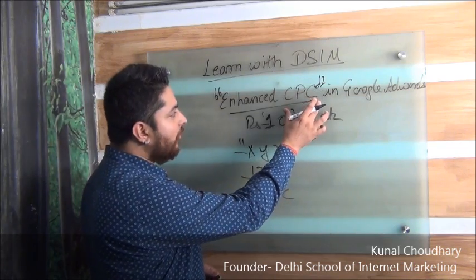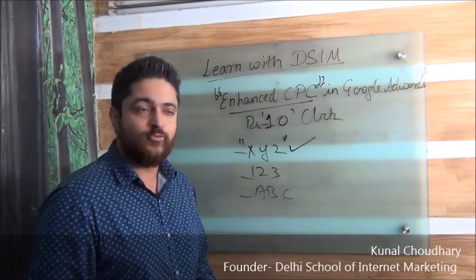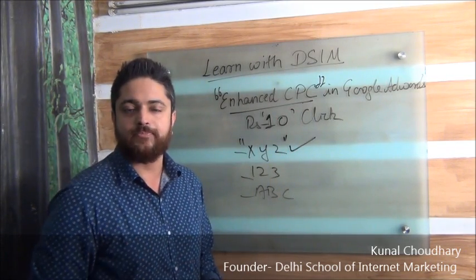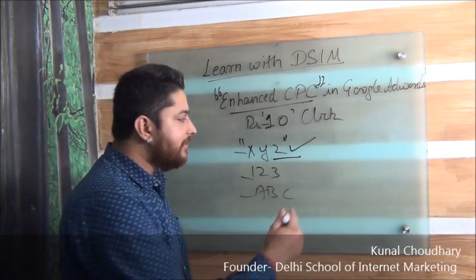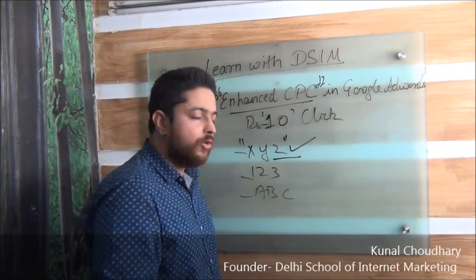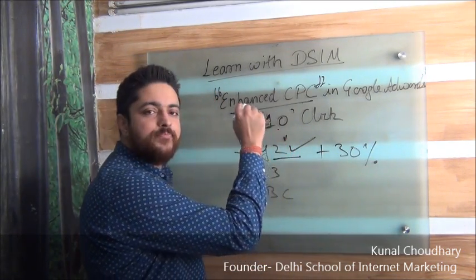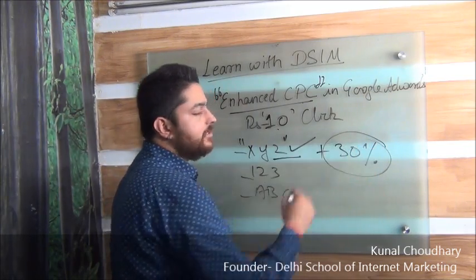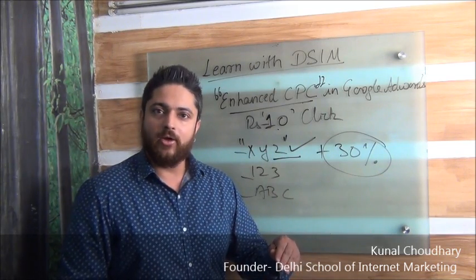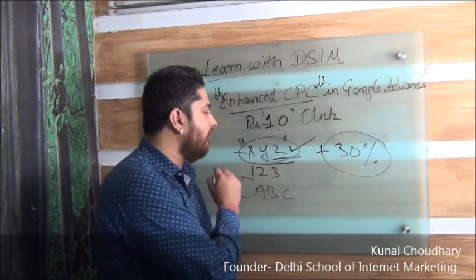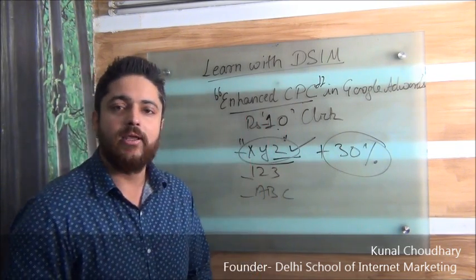So if we have opted for Enhanced CPC, what Google will do automatically — we just have to select Enhanced CPC as a bidding option — is every time someone searches for the XYZ keyword, Google is going to increase our bid up to 30%. So instead of charging 10 rupees per click, Google will charge us maybe 13 rupees per click, so that our advertisements appear most of the time whenever someone searches for XYZ. That's how the Enhanced CPC bid strategy works.